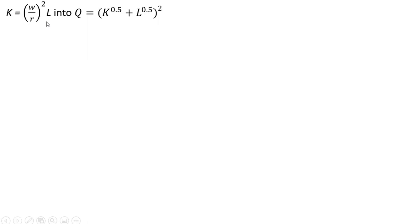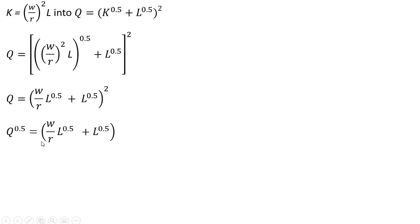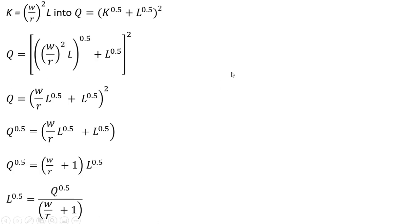We take the K expression we just found and plug it into the production function — where we have K, we plug in (W over R) squared times L. Making that substitution and simplifying: the 0.5 times 2 leaves us 1, and then we have L raised to the 0.5 power. Taking the square root of both sides gets rid of the 2 in the exponent. On the right-hand side we factor out L to the 0.5 power, divide through by the term in parentheses, then square both sides.